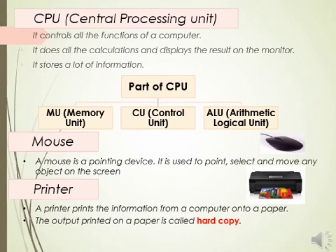CPU — Central Processing Unit. It is known as the brain of the computer as it controls all the functions of a computer. It does all calculations and displays the results on the monitor. It also stores a lot of information.